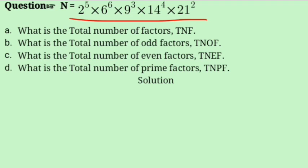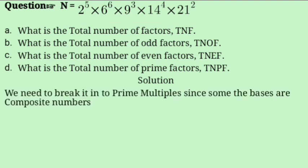When we solve it, we don't need to redo prime factorization from scratch, but we need to check that all bases are prime numbers. As you can see, 6 is not prime, 9 is not prime, 14 is not prime, and 21 is not prime. So we need to convert them into prime factors.